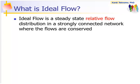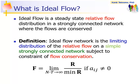What is ideal flow network? Ideal flow is a steady-state relative flow distribution in a strongly connected network when the flows are conserved. Ideal flow is an asymptotic value of the steady-state equilibrium with a large number of agents through random walk in the network until the simulation time is infinite. Ideal flow is a relative flow or rational number so that it can be scaled up or down to an integer.